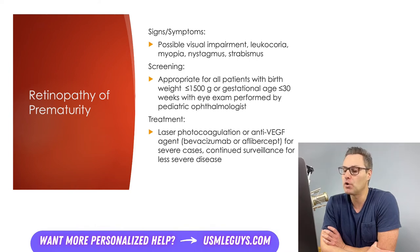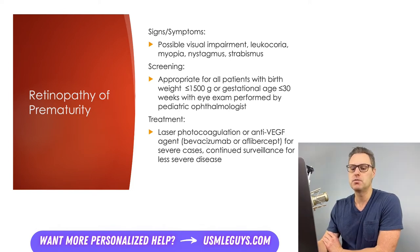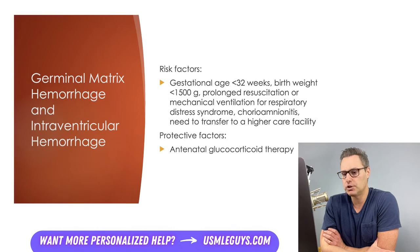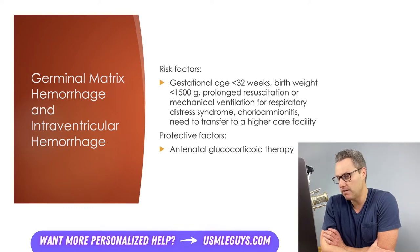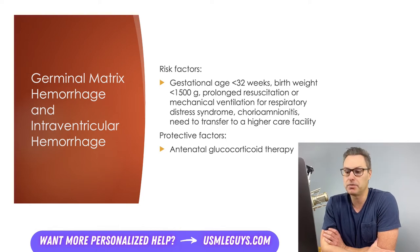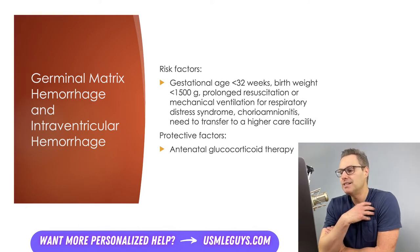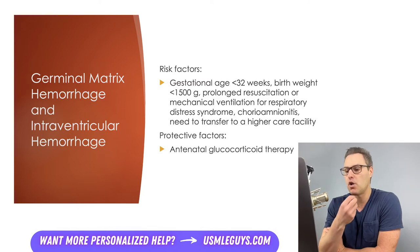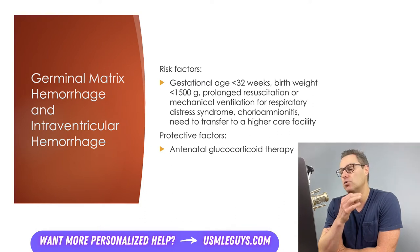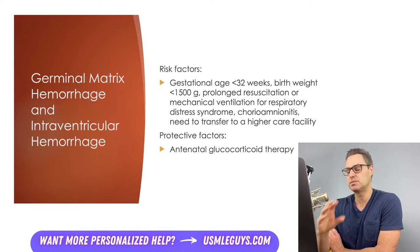If retinopathy of prematurity progresses to retinal detachment, surgical reattachment of the retina will be performed. Our final topic is germinal matrix intraventricular hemorrhage. This condition is characterized by bleeding that begins in the germinal matrix because of structural instability of the region, especially in preterm and low birth weight infants. It's fairly rare for a term infant to have this condition unless they have a genetic disorder affecting vessel stability or coagulation factors and platelets. Other risk factors include respiratory distress syndrome requiring mechanical ventilation, transfer to another institute for higher level care, prolonged neonatal resuscitation, and chorioamnionitis. Patients with mothers given antenatal glucocorticoid therapy in anticipation of preterm birth tend to less frequently be affected by this hemorrhage.